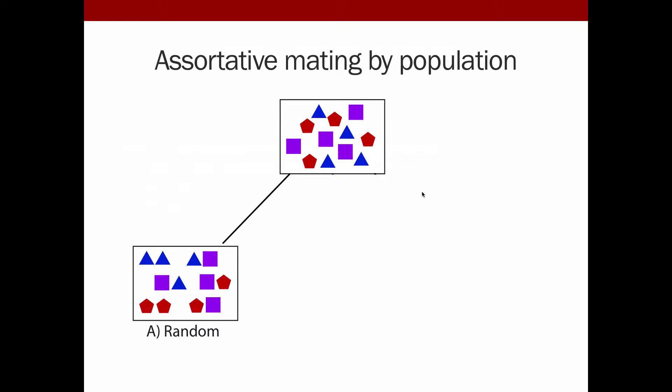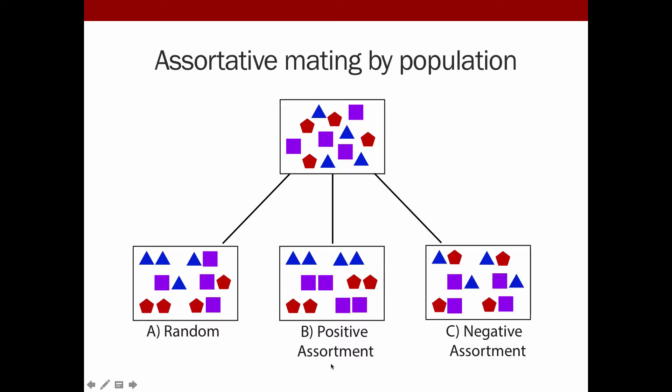They can mate randomly, which is what most models assume, either explicitly or implicitly, where sometimes you'll have like mating with like, but sometimes not. The mating pairs are really just occurring based on their frequency in the overall parental pool. You can have positive assortative mating, where you have this increased frequency of like mating with like over all the populations or some of the populations. Or you can have negative assortment, where you have like mating with dislike.